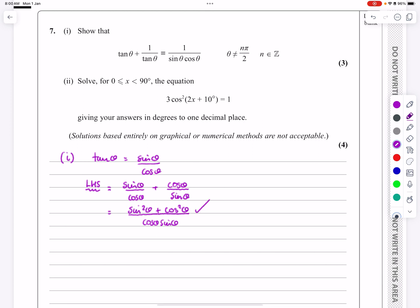And then we also know our second identity is the sin squared plus cos squared is equal to 1. So in that case, we get 1 over cos θ sin θ, which is the same as the right-hand side. So I've taken the left-hand side and I've shown that it's equal to the right-hand side. Proof done. Perfect. That's part 1.